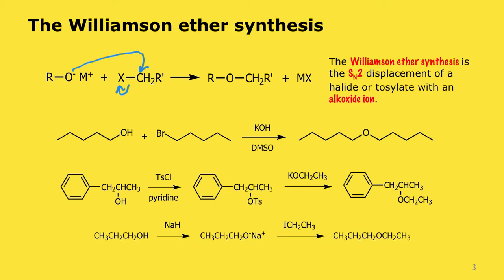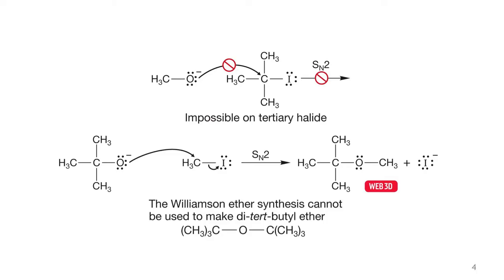There are a host of ways of deprotonating alcohols. This last example uses sodium hydride — hydride is a strong base — which deprotonates the alcohol to form the sodium alkoxide, and that nucleophile can then displace iodine to make the product. The Williamson ether synthesis has broad applications, but its limitation is that it is ultimately an SN2 displacement. If you have a hindered substrate, such as a tertiary substrate, it won't undergo Williamson ether synthesis.